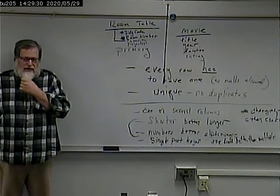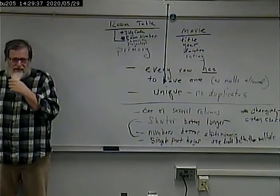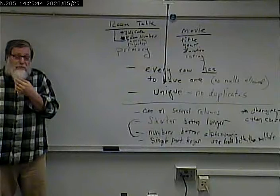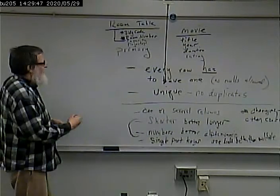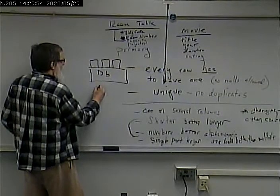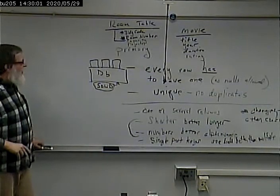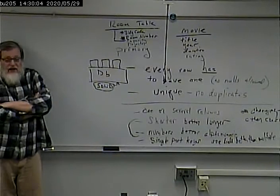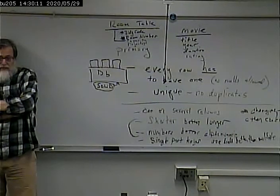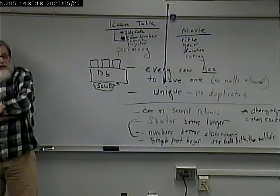Do any of those fields pop out as the primary key? Not really. How many versions of King Kong are there? At least three. Title and year maybe — but remember, we want the database foundation to be solid. Can you guarantee worldwide that in 2011 or 2012 there were no two movies that came out with the exact same title and year?